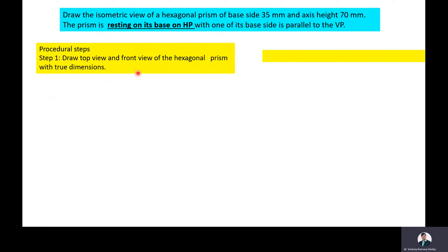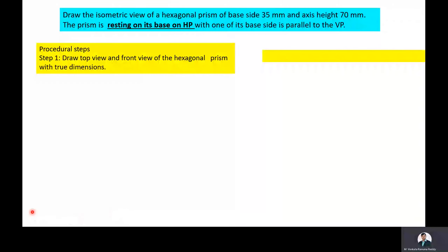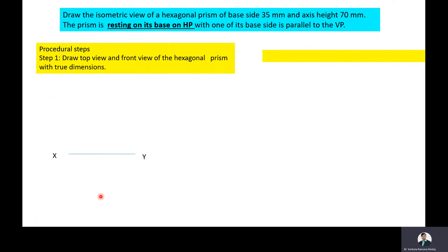We are considering the true dimensions of the object. The hexagonal prism is resting on its base on HP, so its axis is perpendicular to HP and parallel to VP, with one base side parallel to VP. Therefore the top view is a regular hexagon with one side parallel to the x-y line. Draw the x-y line, then draw the regular hexagon with one side parallel to x-y, then draw its related front view.